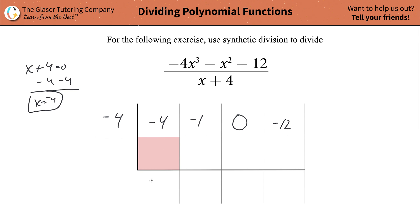Now, follow these steps. Simply take the first coefficient, drop it straight on down. This is a red box because nothing's going to go in it. Then take that value of -4, multiply it by the value on the outside for a total of positive 16. Put it in the next adjacent cell, add that column together for a total of 15.